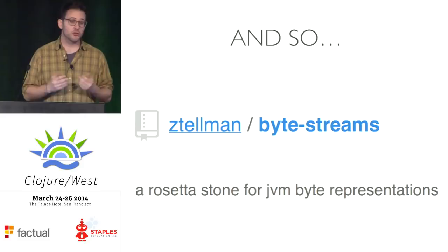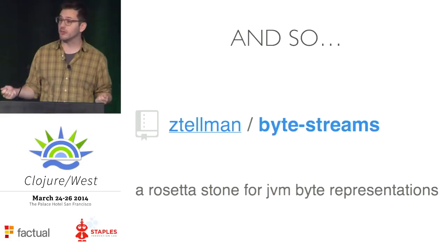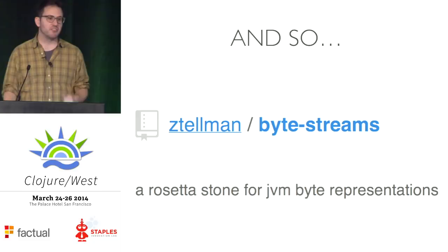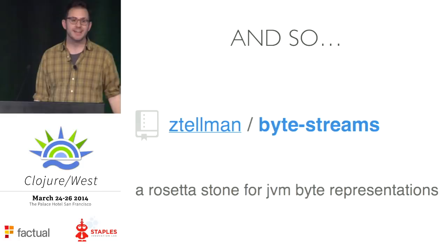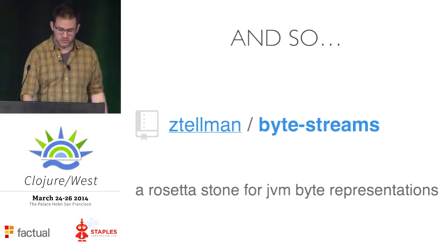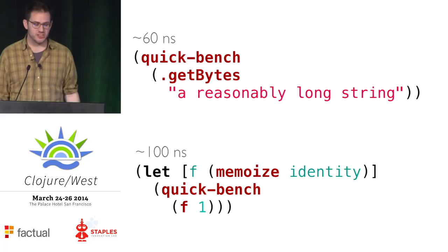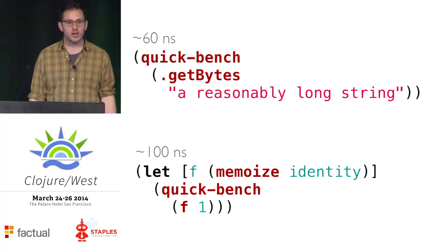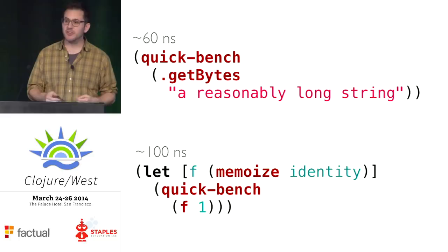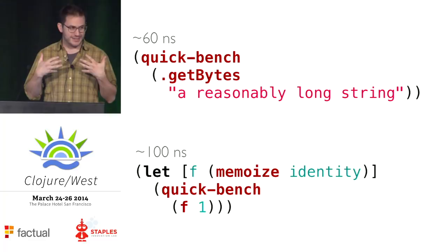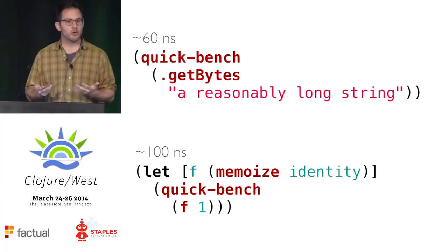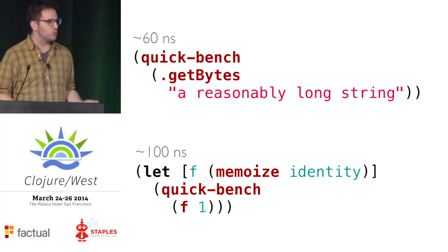Byte-streams traverses a graph and figures out what transformations need to be composed to go from any one point to any other. This works pretty well, and we don't even have to traverse the graph each time because we can memoize that — turning it into a composed set of functions we go through each time. A problem I ran into, though, is that some of these transformations — like going from a string to a byte array — are quite cheap, and memoization is relatively more expensive compared to this cheap transformation. I want this to be a general-purpose library, which means I don't get to dictate the performance sensitivity of its context.